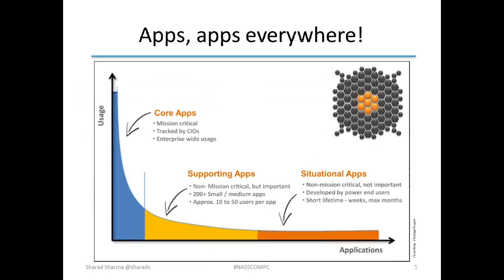Some people argue this would only happen for supporting or situational applications, not for core applications like ERP. But my own personal belief is that is not true at all. I gave you the example of ESIC, which was anything but a supporting or situational application — it was a core application, and yet it dramatically benefited from being done quicker, faster and cheaper. So this tsunami of lower cost corporate applications is going to touch every type of application that exists in the corporate environment. Some of the existing corporate applications will become much more platformized, and you'll be able to build on top of those as well.